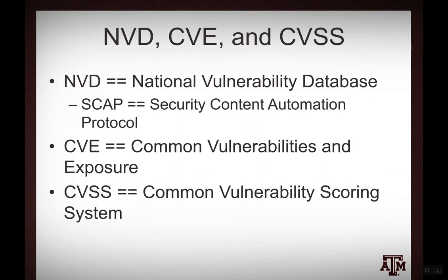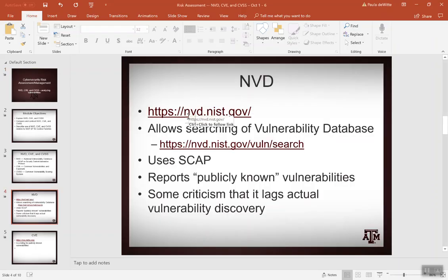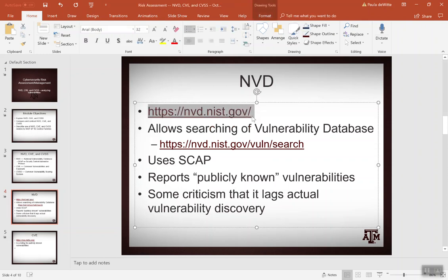So the National Vulnerability Database — NVD — the CVE is the Common Vulnerabilities and Exposure, and the CVSS is the Common Vulnerability Scoring System. There are going to be a bunch of other acronyms, but these are the three I want you to focus on. The NVD uses something called the SCAP — the Security Content Automation Protocol. Let's take a minute and go look at the National Vulnerability Database.